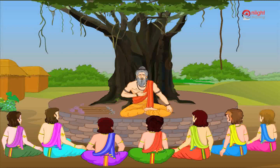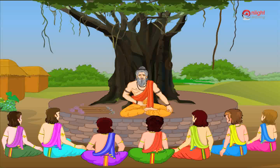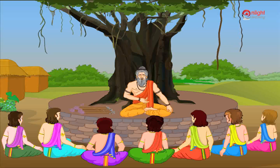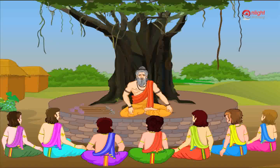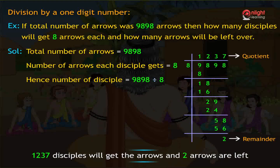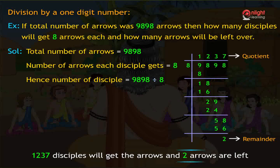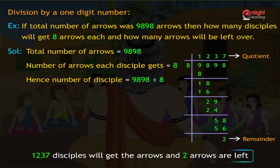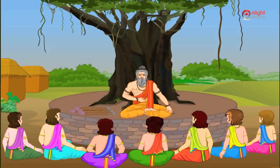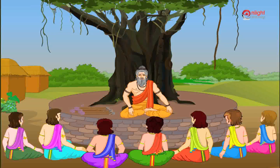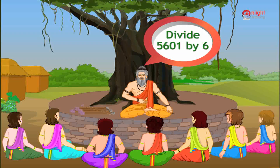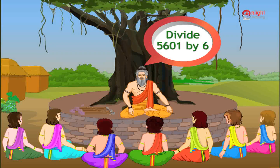Therefore, if 9,898 arrows are distributed equally at 8 arrows each, then 1,237 disciples will get the arrows and 2 arrows are left over. Children, one of you come and try this division. Divide 5,601 by 6.